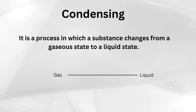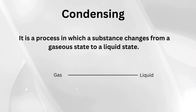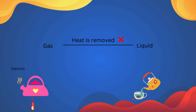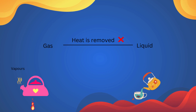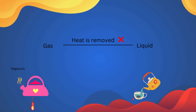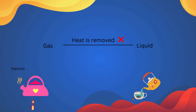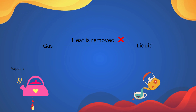The next process is condensation. Condensation is the process in which a substance changes from a gaseous state to a liquid state. It is the opposite of evaporation. In condensation, gas changes into liquid when heat is removed. For example, when you boil water in a kettle, it turns into water vapor. When you remove the heat, the vapor cools down, loses heat energy, and changes back into liquid water.